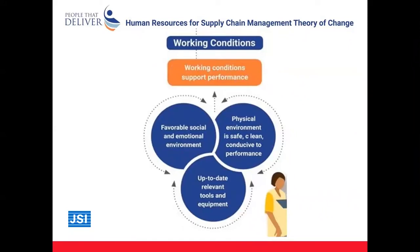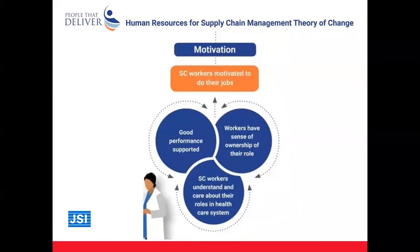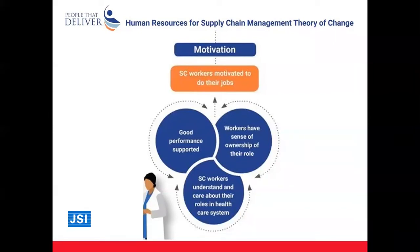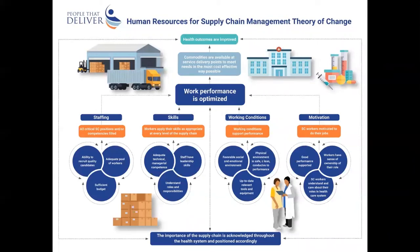Working conditions must be safe and clean, provide up-to-date tools and equipment, and offer a favorable social and emotional environment to support staff performance. Finally, staff must be motivated to do their jobs. Good performance should be supported and recognized, as we heard about in the Ethiopia example. Workers need a sense of ownership and pride in the role they play in ensuring the supply chain performs, and must understand that what they do in supply chain has an impact on the health of the people of their region and nation. If these four prerequisites are in place, work performance is optimized and the goal of commodity availability and positive health outcomes can be achieved.